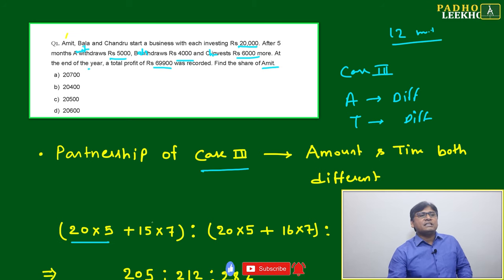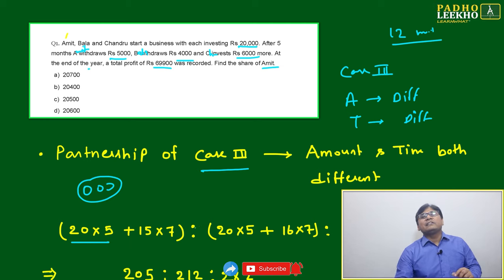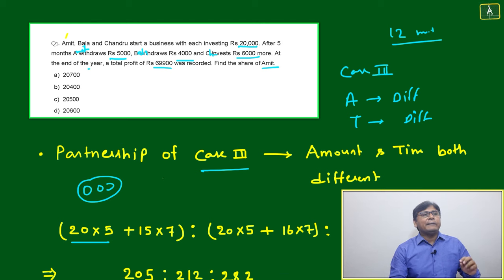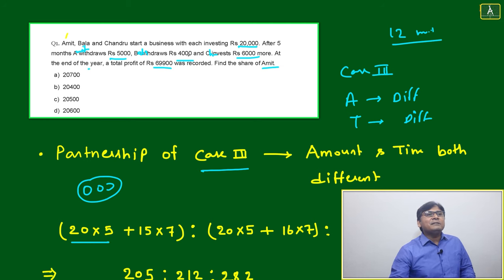20 into 5 - 20,000, just we have taken 20. Three zeros I have removed because it will be common. If you're taking the ratio, all will be cancelled out. Then only I am taking this initial 2 digits, 20. Then 20 into 5 plus 15 into 7.